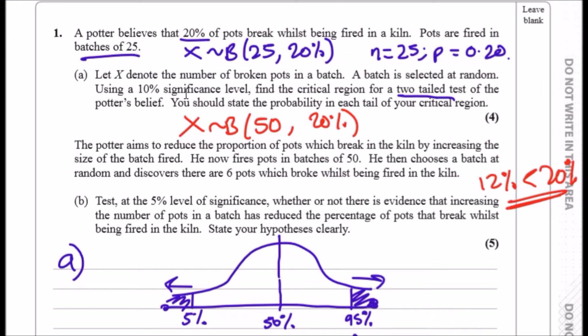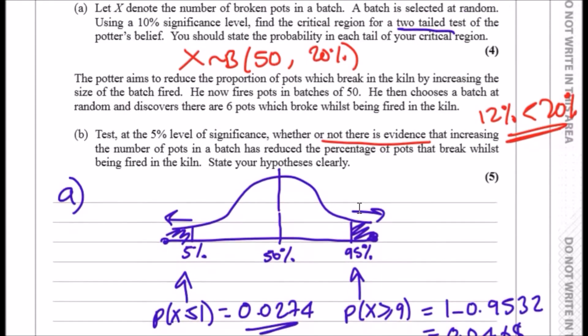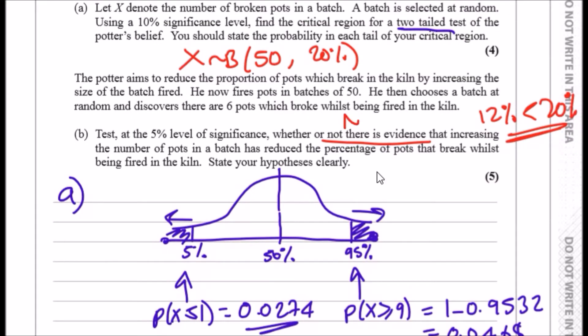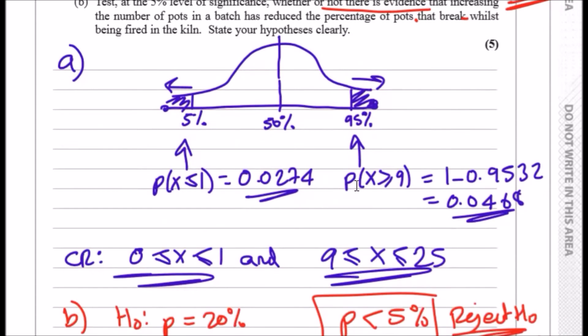So that's what it really means. Ultimately we can say that there is no reason to assume the new beliefs. So we can say there is no evidence that increasing the number of pots has reduced the percentage of pots that break. There is no evidence that increasing the number of pots has reduced the percentage of pots.